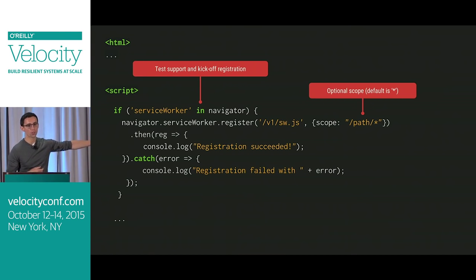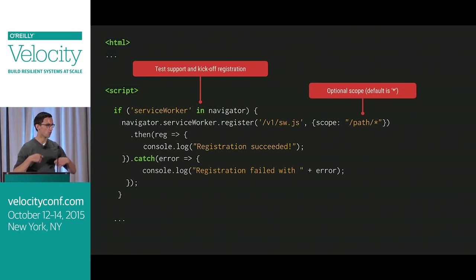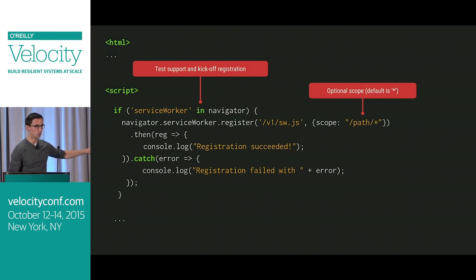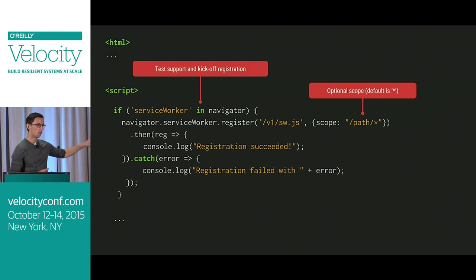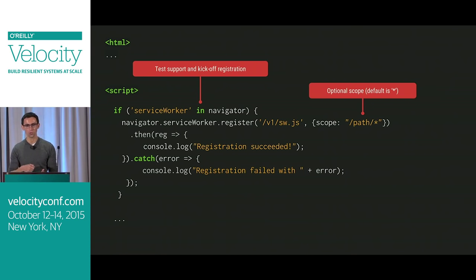If the registration is successful — meaning we were able to fetch the Service Worker script, parse it, and start executing it — we call registration succeeded, so you know it's running in the background. It's important to know this is completely asynchronous. You can drop this snippet into your page and the page continues to load as is — you're basically adding this as a progressive enhancement. The registration runs in the background and we try to keep it low priority so it doesn't interrupt your browsing experience. As a user you should see nothing — there are no prompts saying someone's trying to install a Service Worker. It just runs in the background like any other asynchronous script.